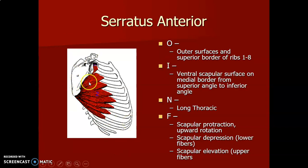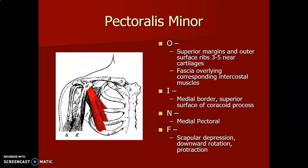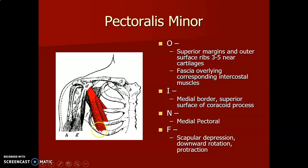Pectoralis minor originates from ribs 3 to 5 and inserts onto the coracoid process. It is innervated by the medial pectoral nerve and causes scapular depression, downward rotation, and protraction.